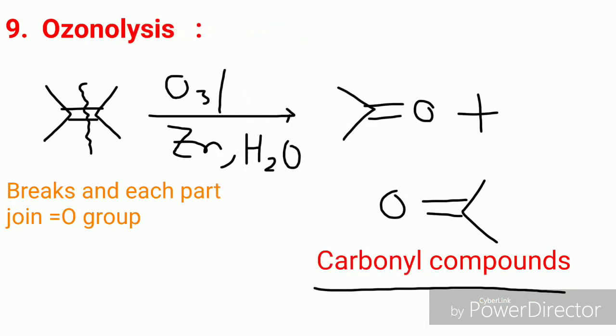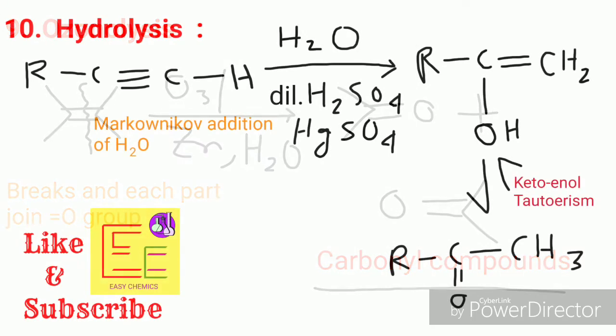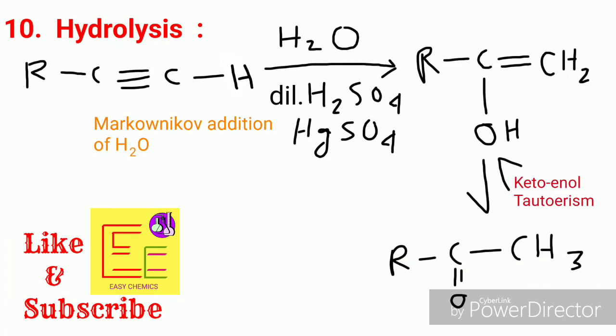The next reaction is ozonolysis, which you may have read about in 11th or 12th standard. Here the double bond breaks and each part is converted to the corresponding carbonyl compounds, via the formation of an ozonide. You should know the structure. This occurs by treatment with ozone (O₃) and then zinc and water (Zn/H₂O).